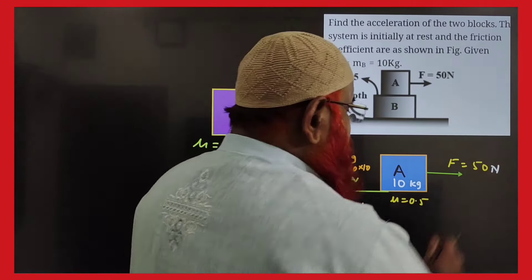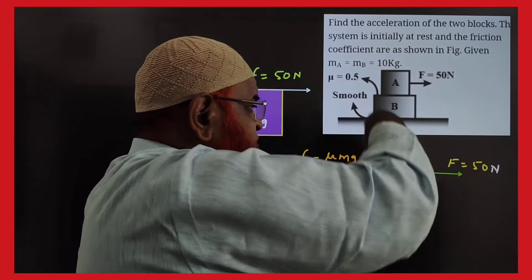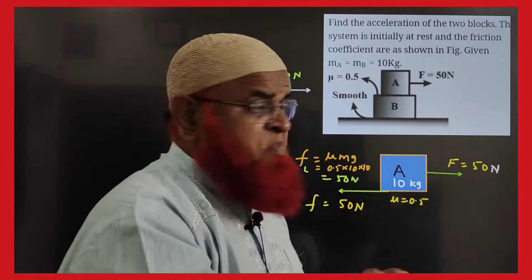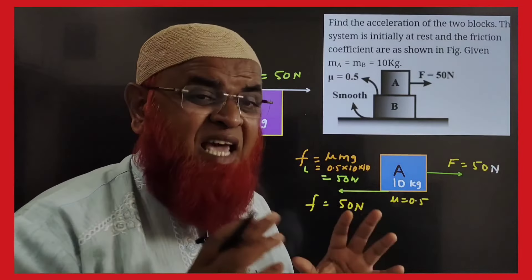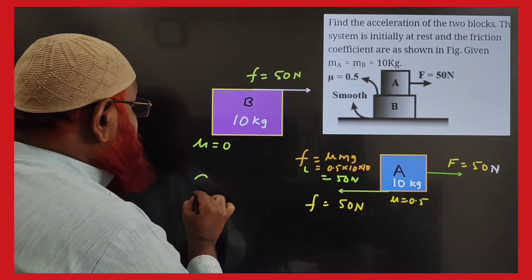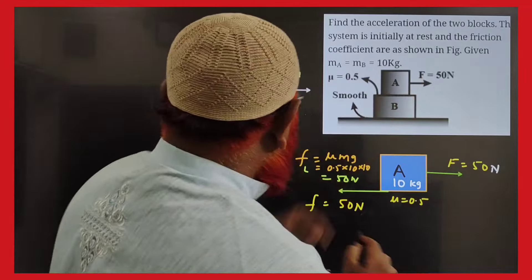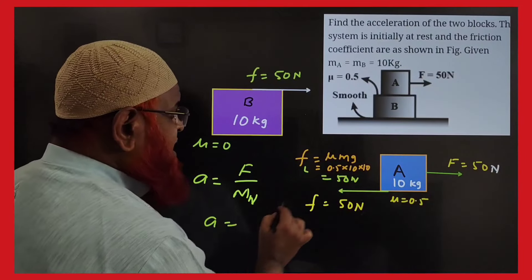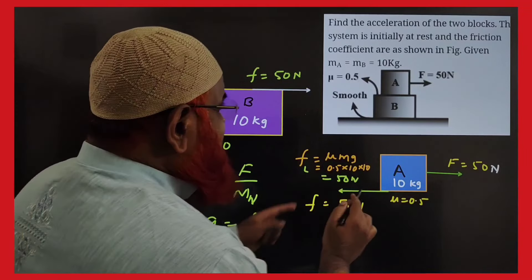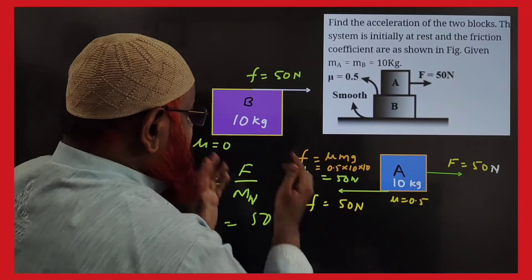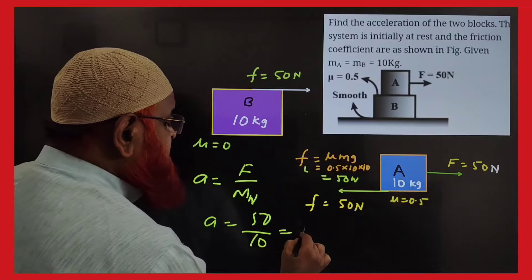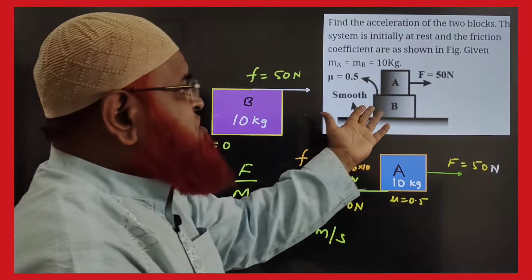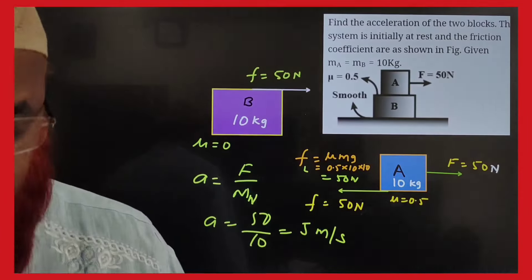The 50 N friction acts backward and 50 N force acts forward, so the upper block fixes on the lower block and both move together. Acceleration equals applied force divided by net mass: 50 divided by (10 + 10) = 2.5 meters per second squared. The lower surface is smooth (mu = 0).